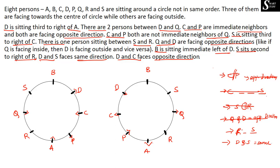The last clue to check: R's second right is S. So R second right must be S. If R is facing center, R's right is in this direction — one, two — S has to be substituted there. If R is facing outward, that is also confirmed. D and S are going to face the same direction — here D is facing outward so S has to face outward, and in the other case D is facing center so S has to face center as well.